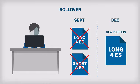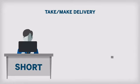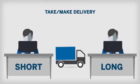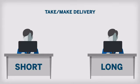If a trader has not offset or rolled his position prior to contract expiration, the contract will expire and proceed to settlement. At this point, a trader with a short position will be obligated to deliver the underlying asset under the terms of the original contract. In some markets this will take the form of physical delivery, and in other markets will be settled through a cash delivery.